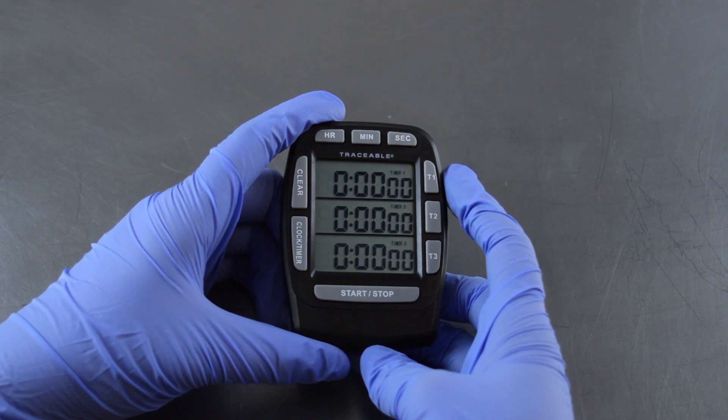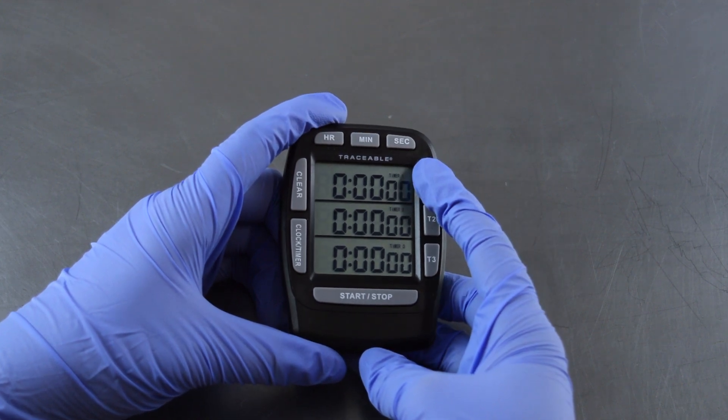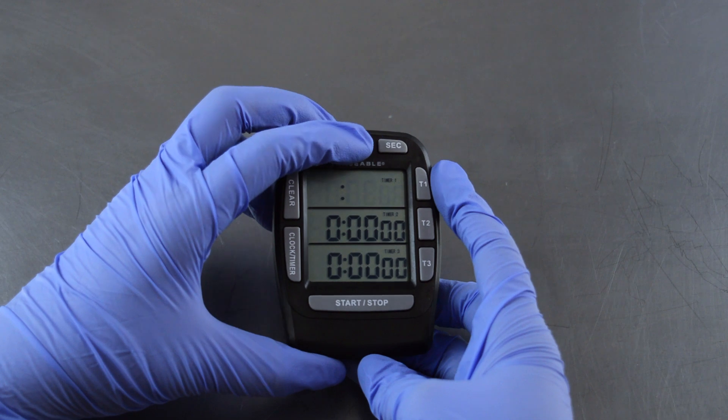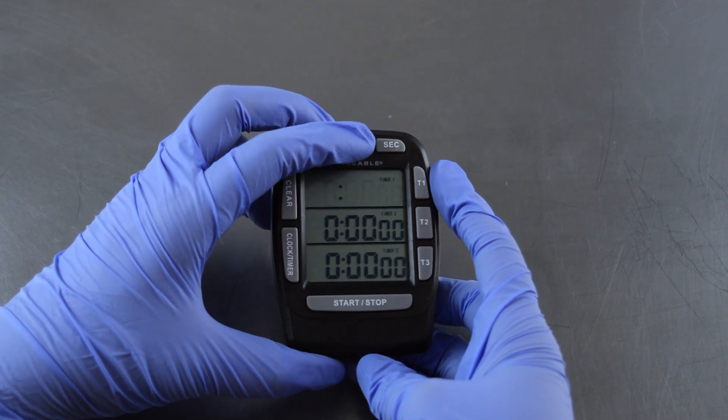If you're testing for microorganisms in your compressed air, you only need to use T1. Set for 10 minutes, and press T1 again to lock.